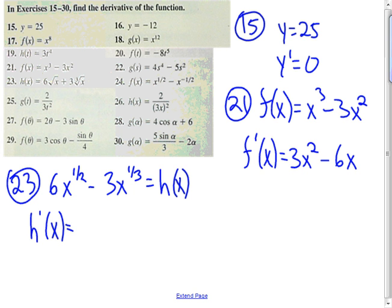The derivative of 6x to the one-half, using the rule that the derivative of x to the n is n times x to the n minus 1, that's going to give me 6 times the derivative of x to the one-half is one-half x to the negative one-half.